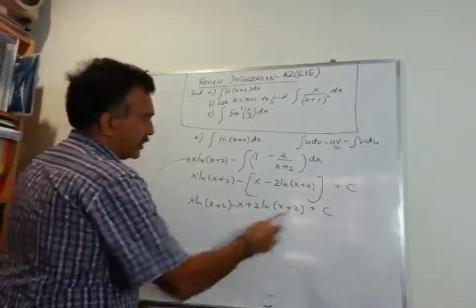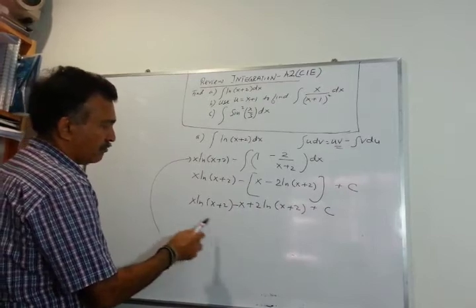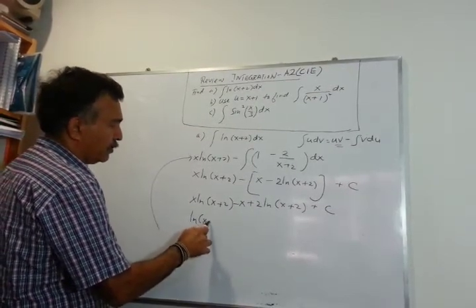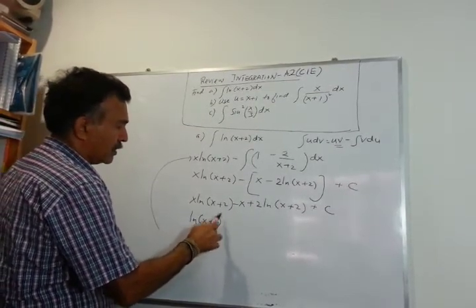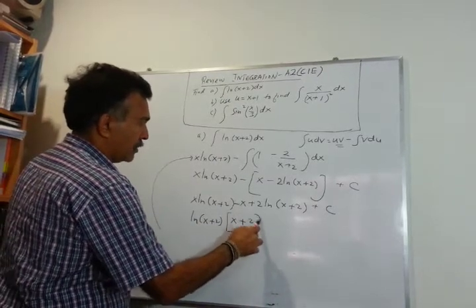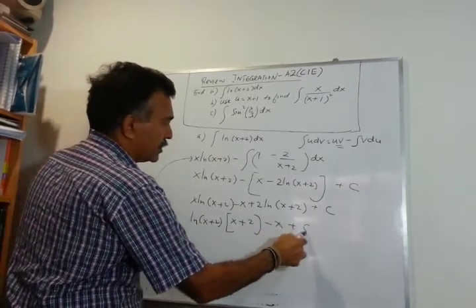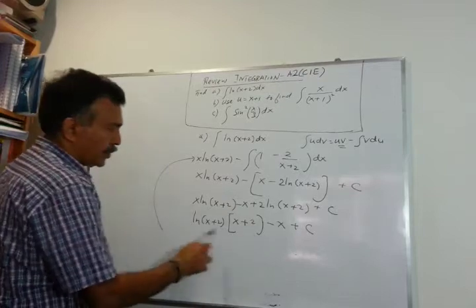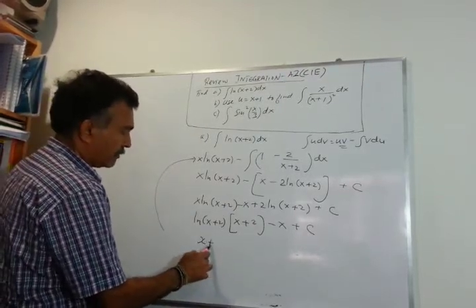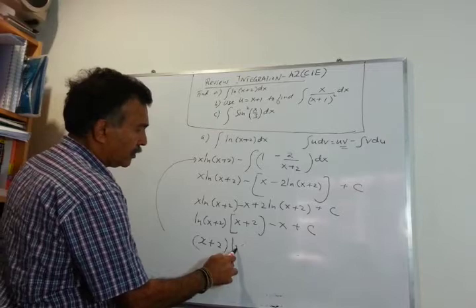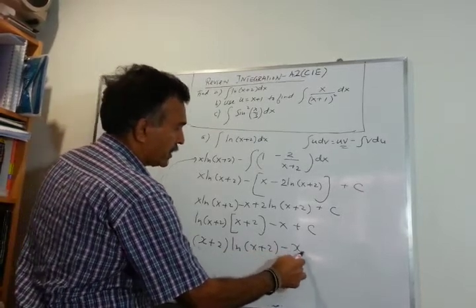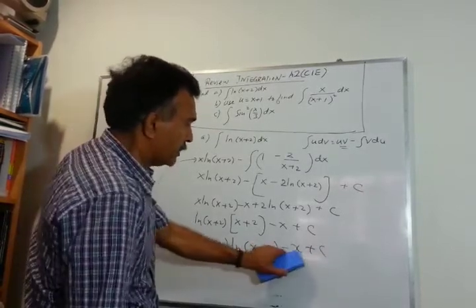You can leave your answer like that, or you can do a bit of factorizing. Taking out ln(x+2): we get x minus (x+2), so the factorized form is (x+2)·ln(x+2) minus x plus c.